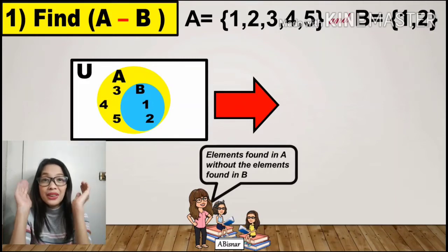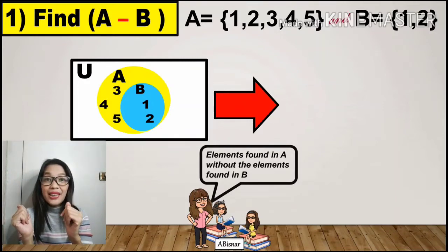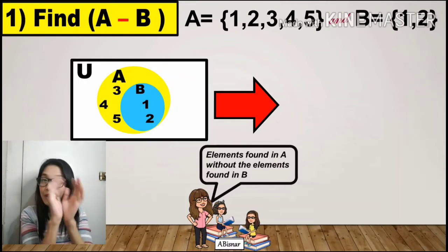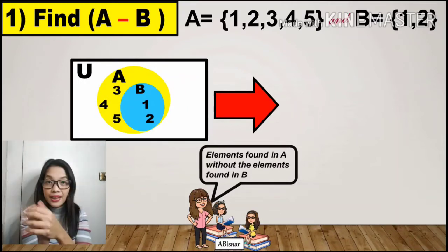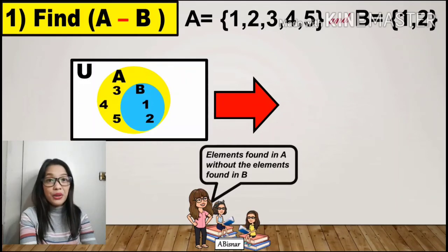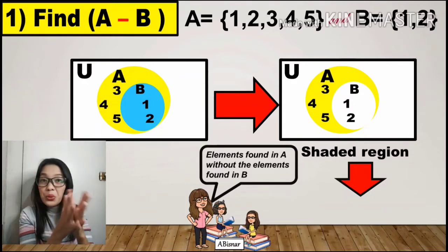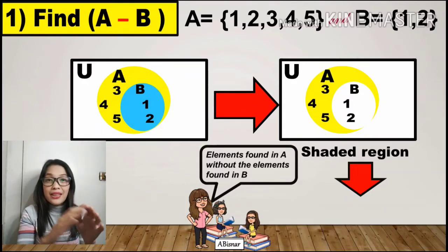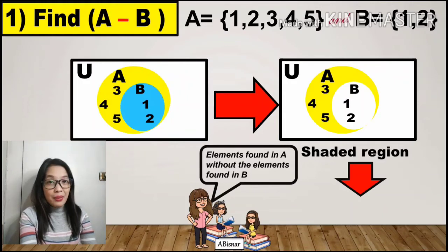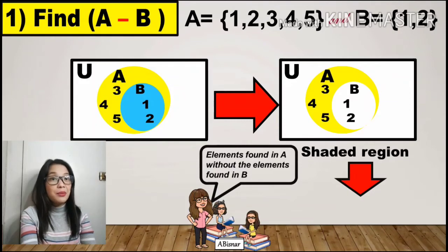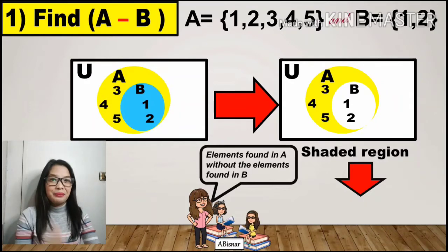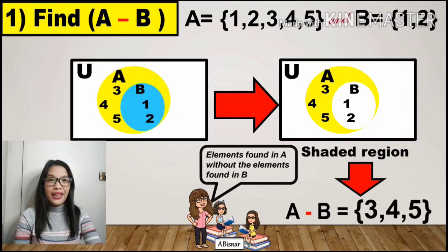To get the difference, we take the elements found in A only, without the elements in B. So we remove the elements in B that are also in A. The elements inside the shaded region will be the difference of A and B, and those elements are 3, 4, and 5.